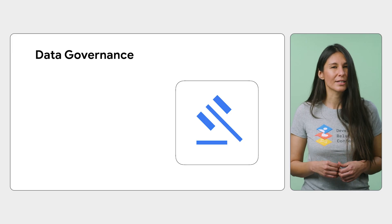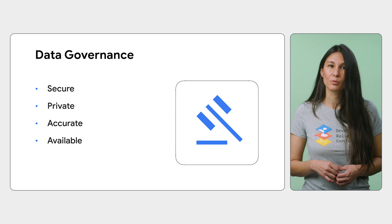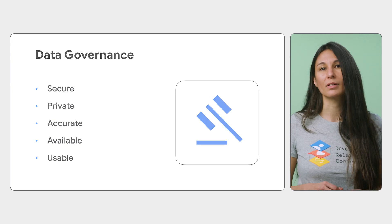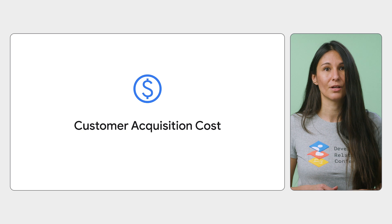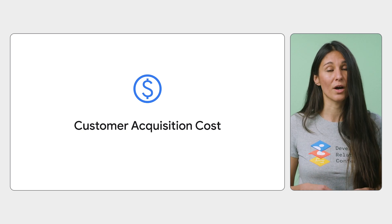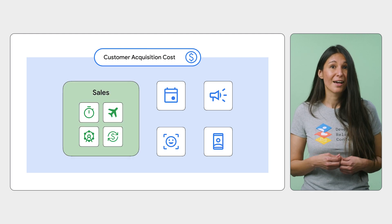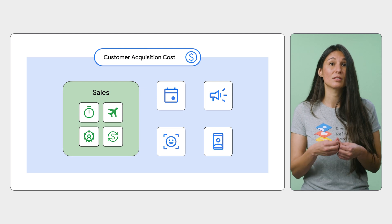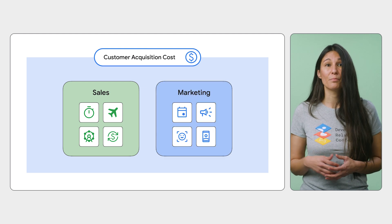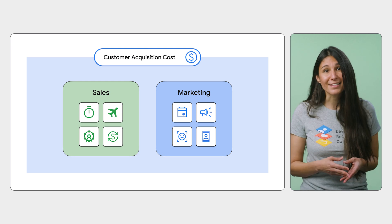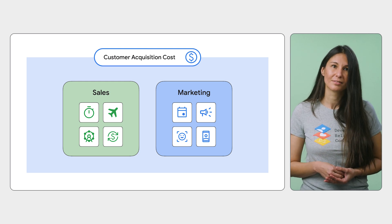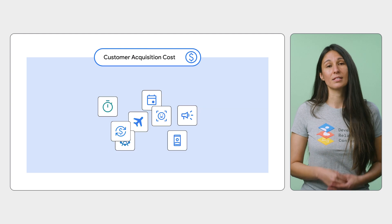Now let's shift focus to Looker. One of the biggest challenges businesses face is data governance — ensuring that data is secure, private, accurate, available, and usable. To demonstrate why governance is important, let's review customer acquisition cost as an example: the cost estimated for a business to gain one new customer. The sales team might define it by including sales team time, travel, entertainment, lead generation costs, commissions, and bonuses. But the marketing team might focus more on event costs, advertising campaign costs, or influencer marketing. If these metrics don't have a centralized definition, you can end up with conflicting reports and a lot of confusion.